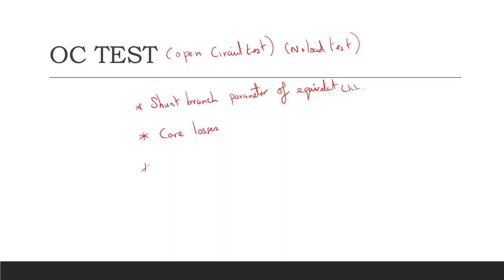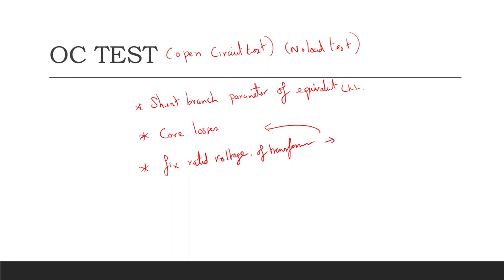We are going to fix the rated voltage of the transformer, and from that rated voltage we are going to find out the corresponding core loss of the system. Why we go for OC and SC test? In order to pre-determine the efficiency and performance of the transformer we go for this OC and SC test.